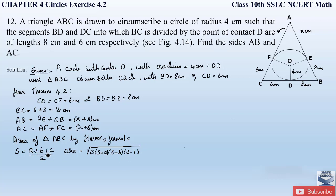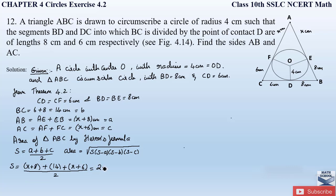We take AB = a = x + 8, BC = b = 14, and AC = c = x + 6. So S = (x+8 + 14 + x+6) / 2 = (2x + 28) / 2. Taking 2 as common factor and cancelling with the denominator, S = x + 14.